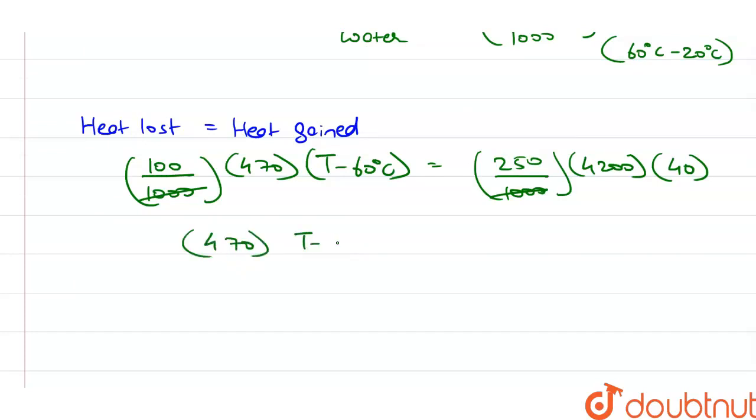T minus 60 degrees Celsius is equal to 2.5 into 4200 into 40. T minus 60 degrees Celsius is equal to 42 into 20.